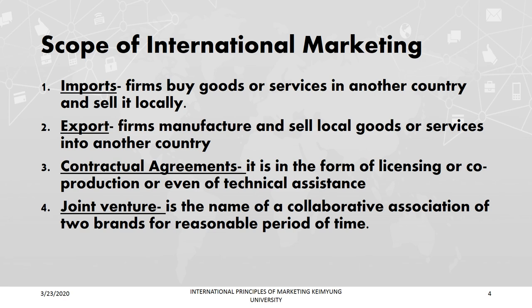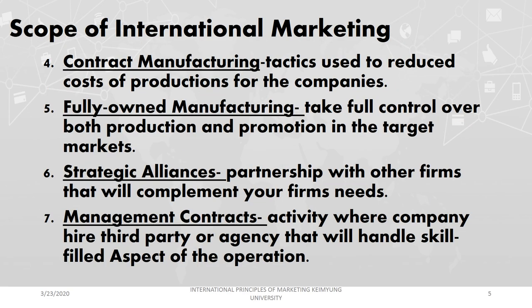Another scope is contractual agreements. Sometimes it is difficult to sell the product in another country, so the strategy is to give a license or permit to another country to use their names or the features of their products in selling. That is contractual agreements in terms of licensing and franchising. The fourth scope is joint venture — a collaborative association of two brands for a reasonable period of time, more on partnership.